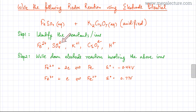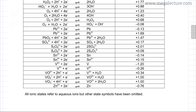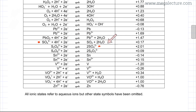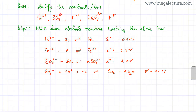Moving to SO4 2- ions, looking at the data booklet there are two electrodes containing SO4 2-. One has S2O8 2- in equilibrium with SO4 2-, with a potential of 2.01 volts. The other has SO4 2- reacting with H+1 ions — and we do have H+1 in our reactants — where SO4 2- and H+1 are in equilibrium with SO2. This top electrode has a potential of 0.17 volts.